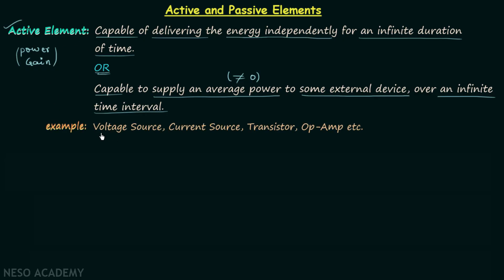The first example is voltage source, and the second example is current source — here we are talking about both dependent and independent current and voltage sources. The third example is transistor; since a transistor can provide power gain, it is an active element. The next example is operational amplifiers.